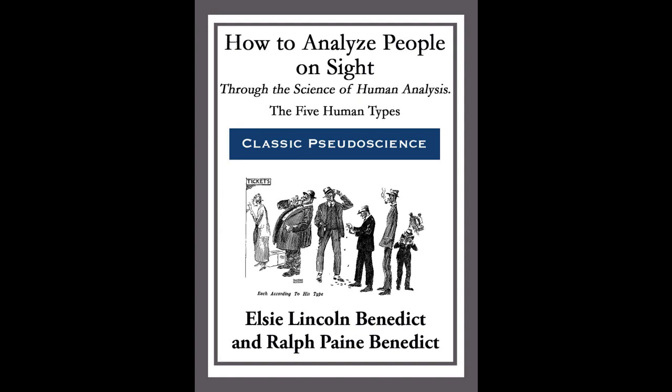Several hundred people were turned away from the Masonic Temple last night, where Elsie Lincoln Benedict, famous human analyst, spoke on how to analyze people on sight. Asked how she could draw and hold a crowd of three thousand for a lecture, she said, 'Because I talk on the one subject on earth in which every individual is most interested — himself.' — Seattle Times, June 2nd, 1920.